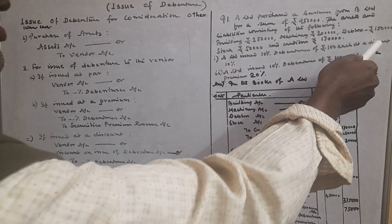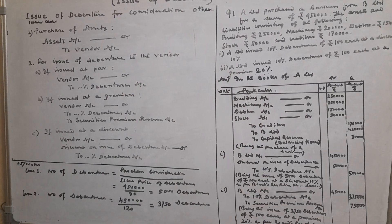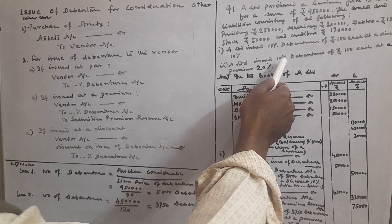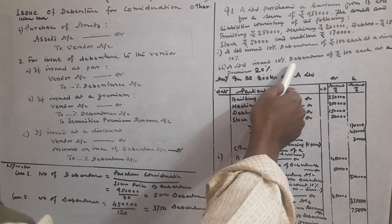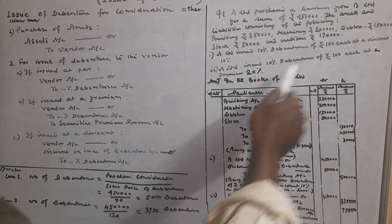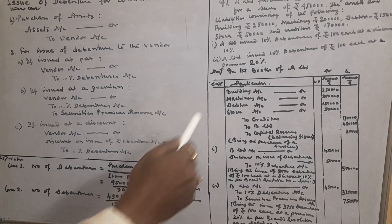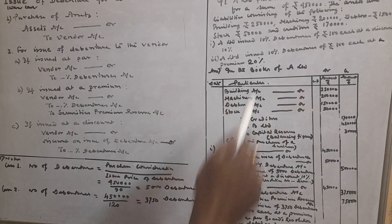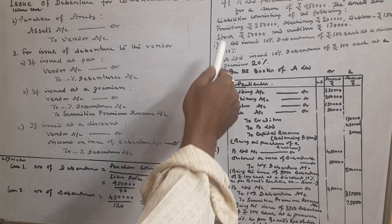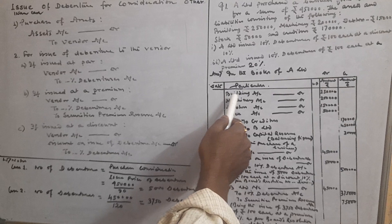Condition A: A Limited issued 10 percent debentures of rupees 100 each at a discount of 10 percent. Condition B: A Limited issued 10 percent debentures of rupees 100 each at a premium of 20 percent. In the books of A Limited, the accounting entries are as follows.